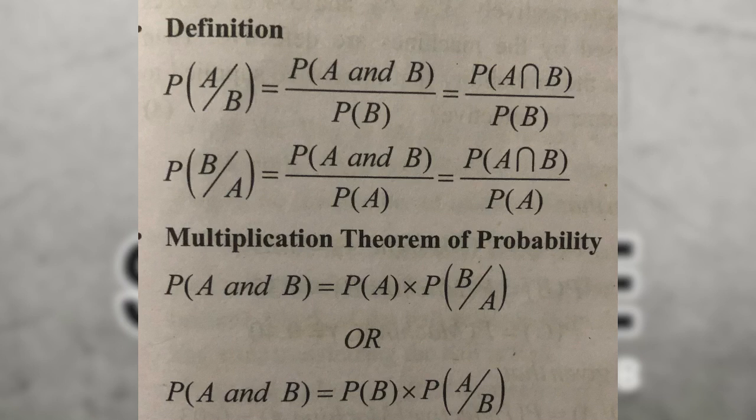P of A given B is the conditional probability definition. The formula is: P of A given B equals P of A and B divided by P of B. Similarly, P of B given A equals P of A and B divided by P of A.